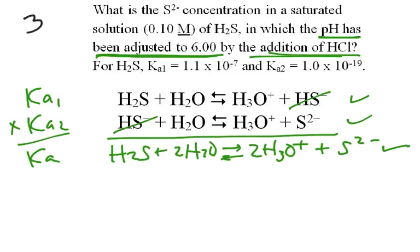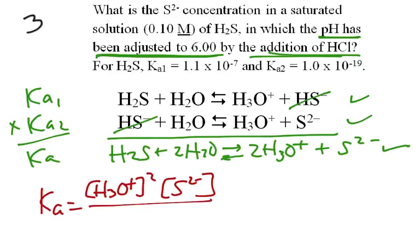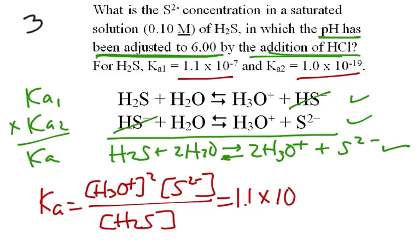So, we can see what's going to happen. We have Ka equal to the concentration of [H3O+]² times the concentration of [S2-], all over the concentration of [H2S], and the waters don't enter into there. And the number we're going to get, we multiply 1.1×10^-7 and 1.0×10^-19. So, I can do that in my head. 1.1×10^-26. Tiny, tiny, tiny number.